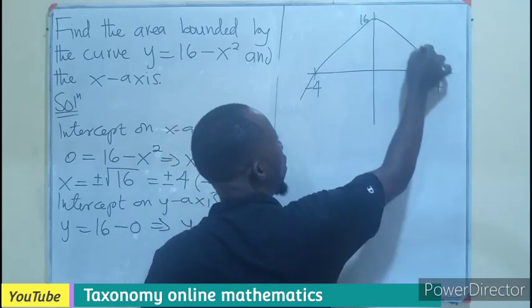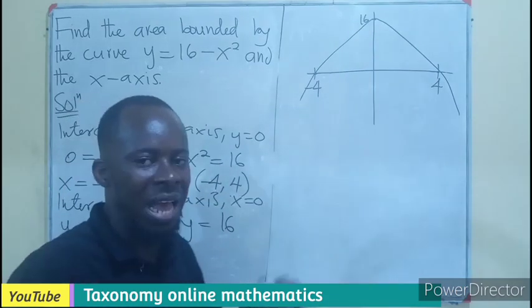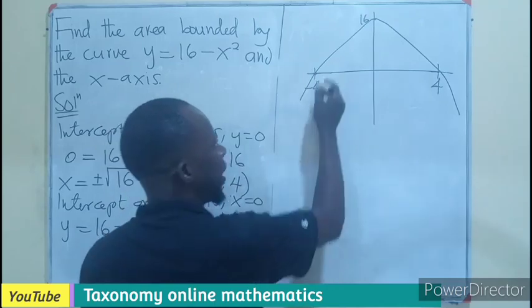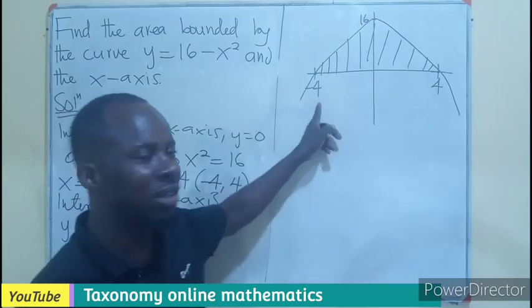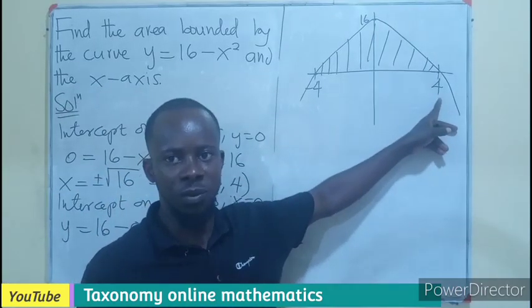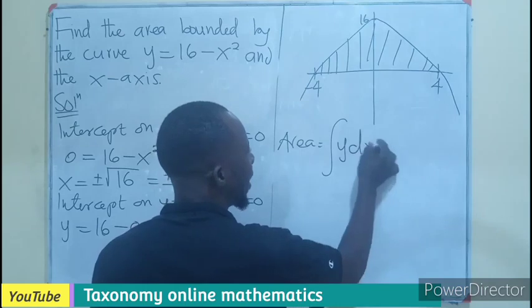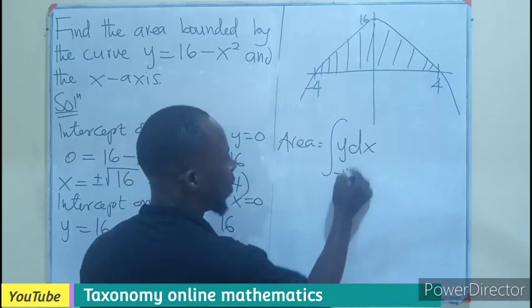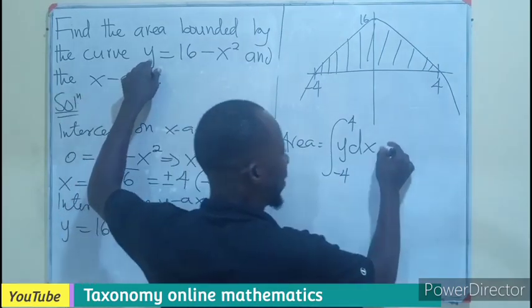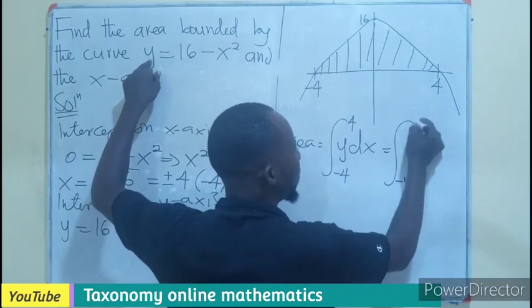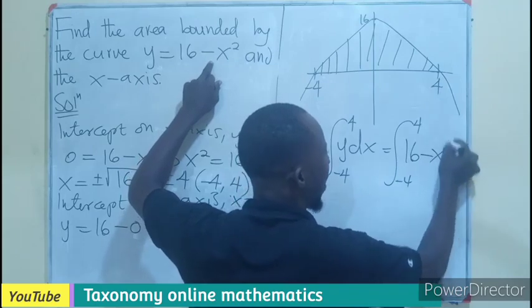Therefore, we go all the way this way. Now we are looking for area bounded by the curve and the x axis. So the area is going to be right away from here to this place with the limit of integration from negative 4 to positive 4. So our area that we are looking for is the integral of y dx right from negative 4 to positive 4. We are integrating the function y which is 16 minus x squared. So we add our dx.